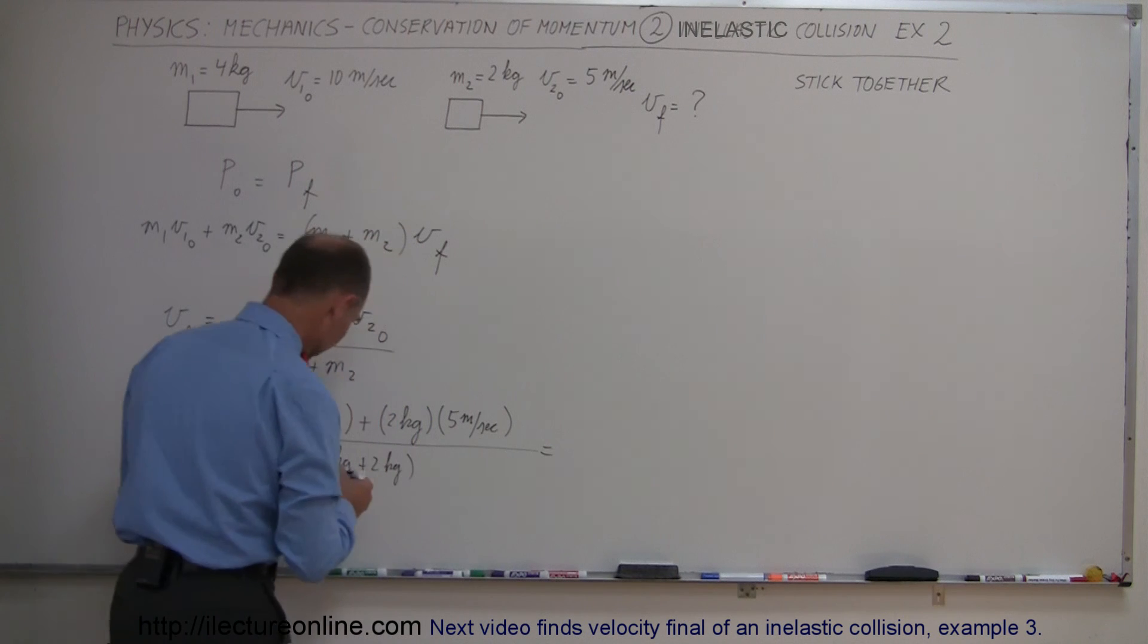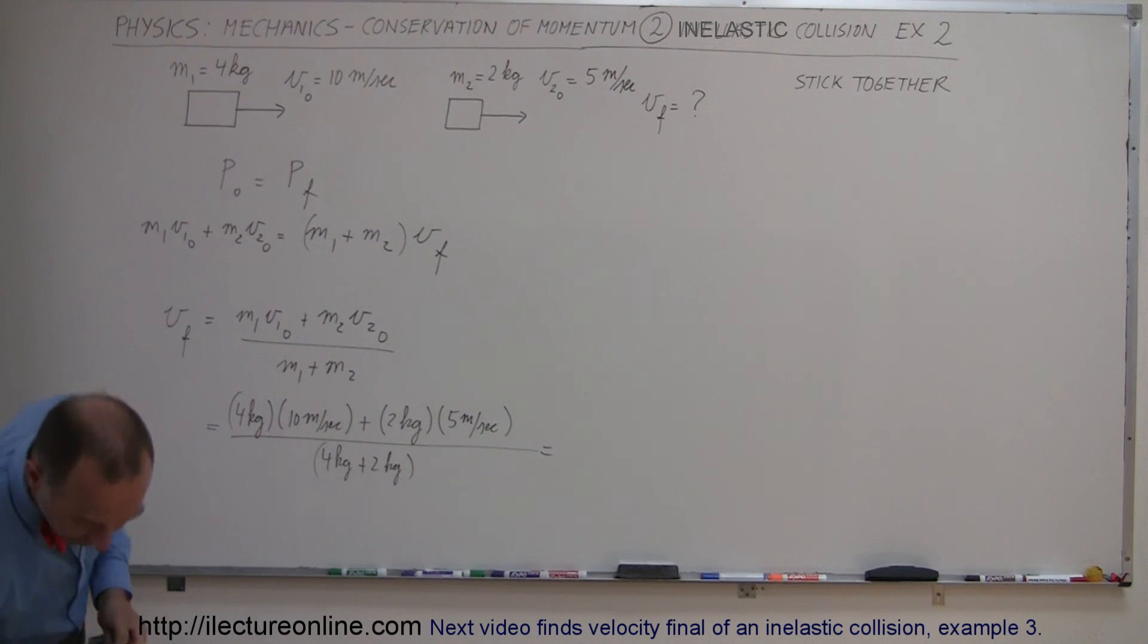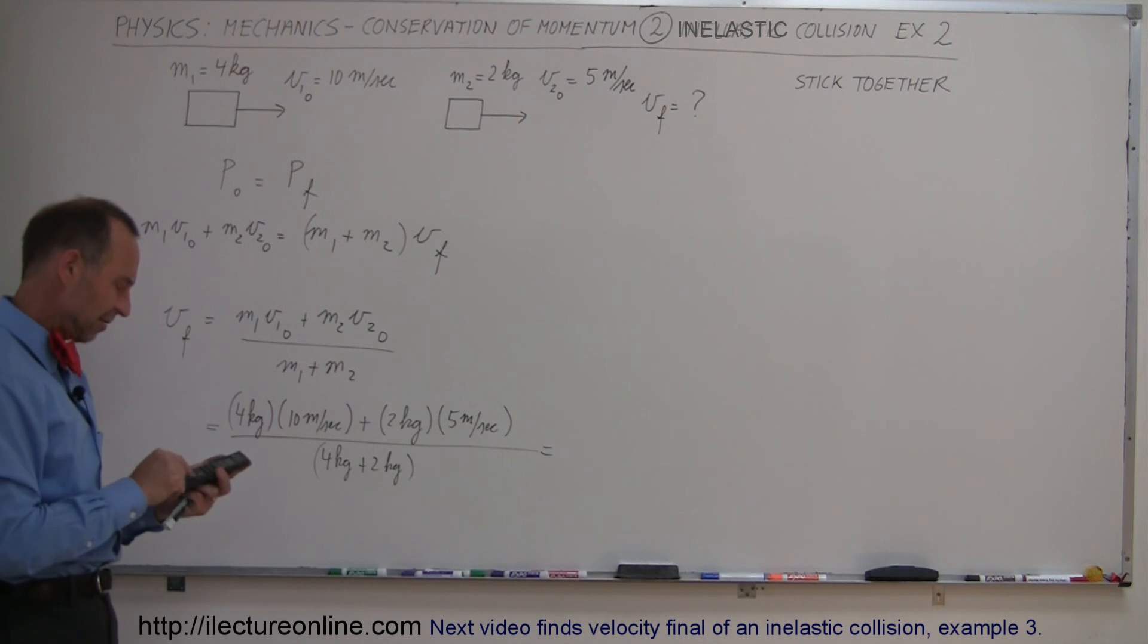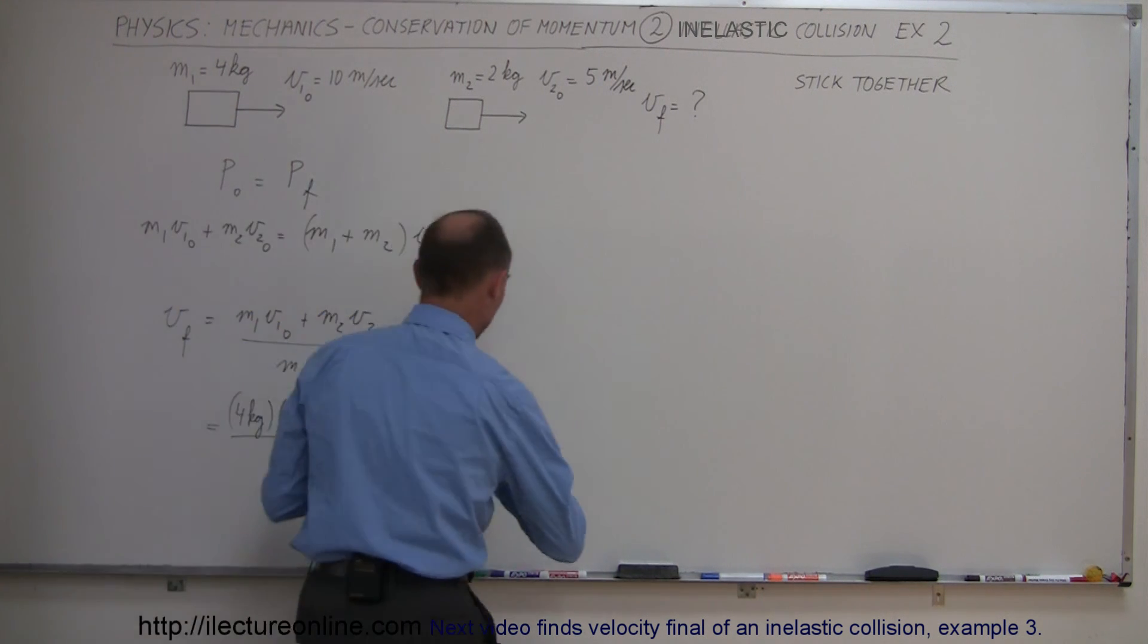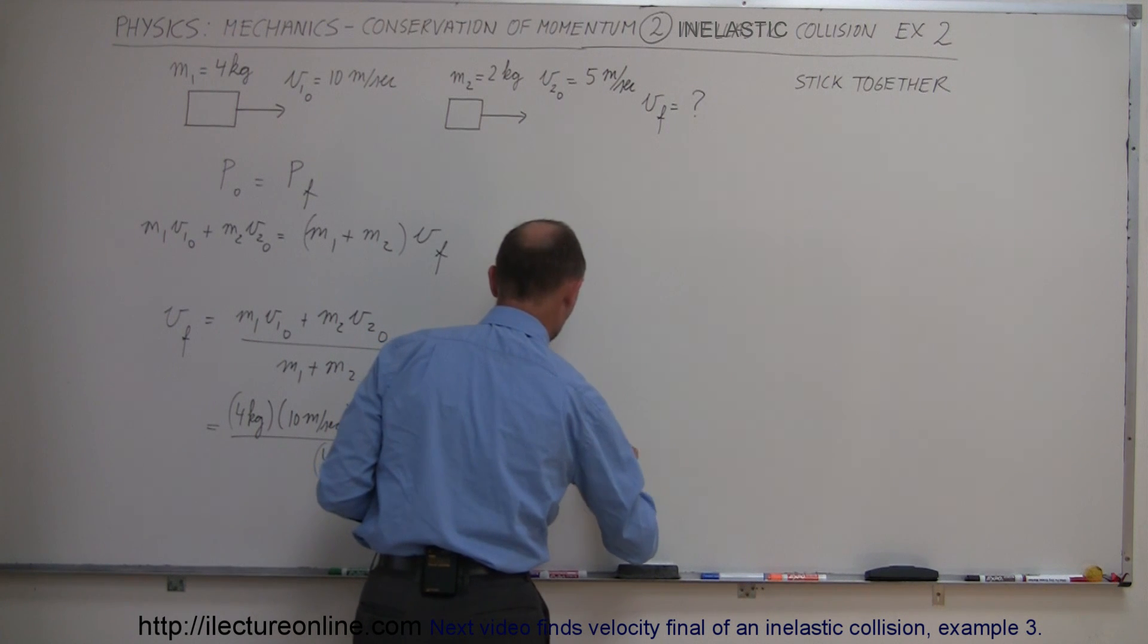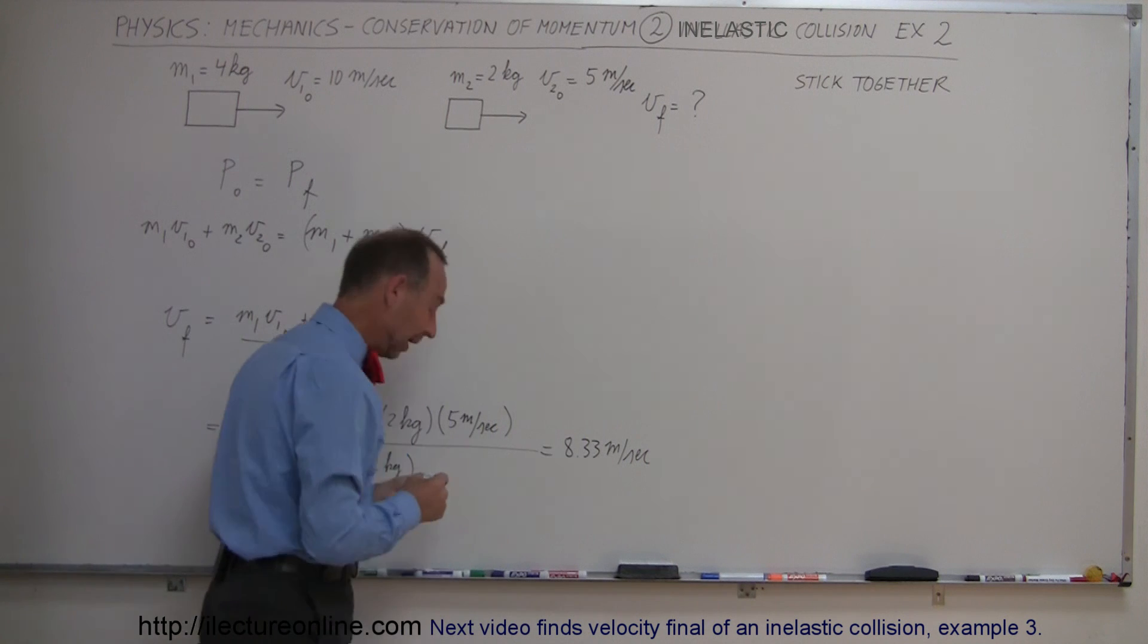So, what does that equal? That's 40 plus 10, that's 50 divided by 6. So 50 divided by 6 equals 8.33 meters per second. There we go, and that's how we do that one.